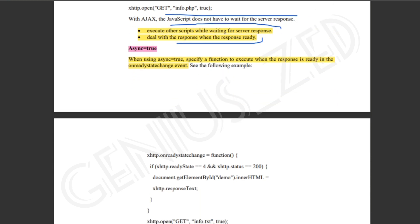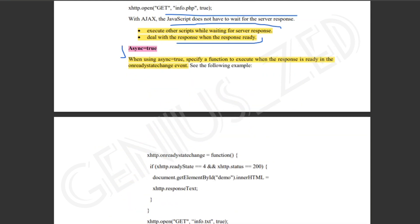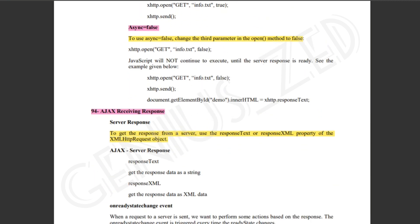This is the asynchronous true and false. When it is true, you specify a function to execute when the response is ready in the onreadystatechange event. When the event is executed, the function runs and the script will properly work. But if we set the third parameter in the open method to false, it will not work the same way.